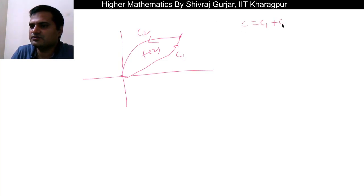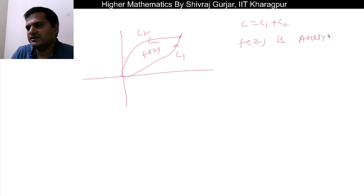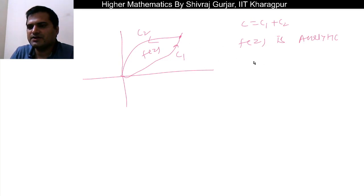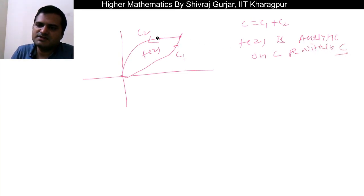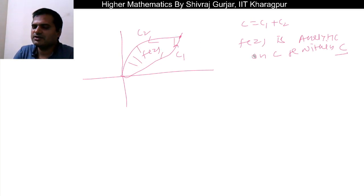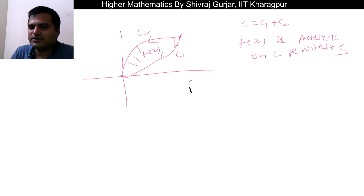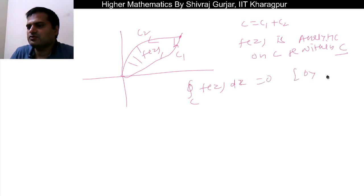For a multiply connected domain, the boundary C consists of C1 plus C2. If f(z) is analytic on C and within C, then by Cauchy's Fundamental Theorem the integral of f(z) dz along the total boundary C equals zero. So ∮_C f(z) dz = ∮_{C1} f(z) dz + ∮_{C2} f(z) dz = 0.